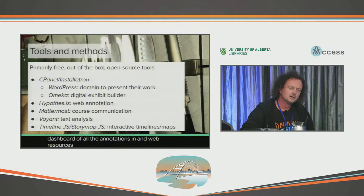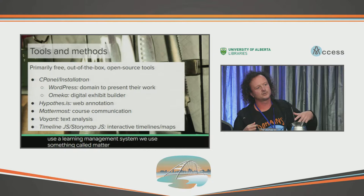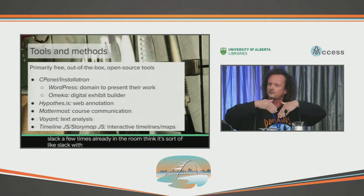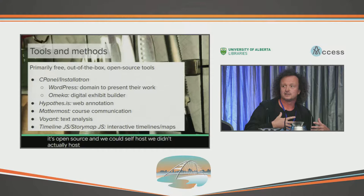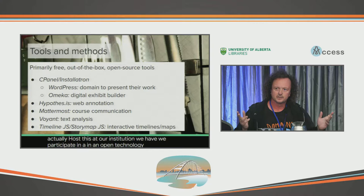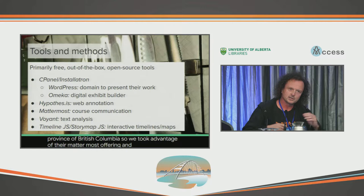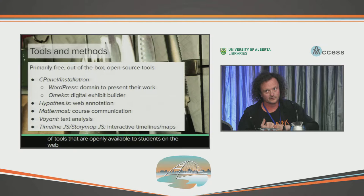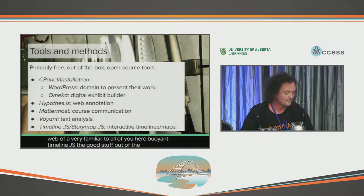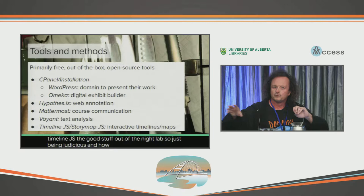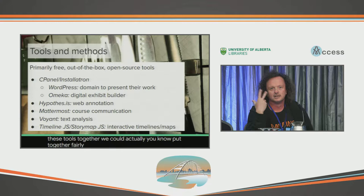For communication, we did not use a learning management system. We used something called Mattermost — it's like Slack with different types of integrations, but it's open source and we could self-host. We participated in an open technology co-op in the province of British Columbia and took advantage of their Mattermost offering. And there are lots of tools openly available to students on the web that are very familiar — Voyant, TimelineJS, the good stuff out of the Knight Lab. By being judicious about how we gathered these tools together, we could put together a fairly robust collection for students to get started with.